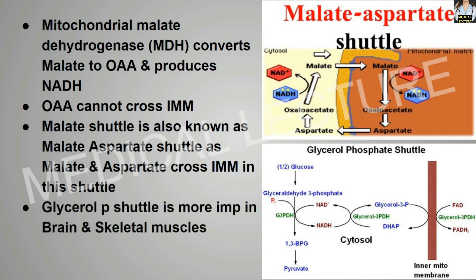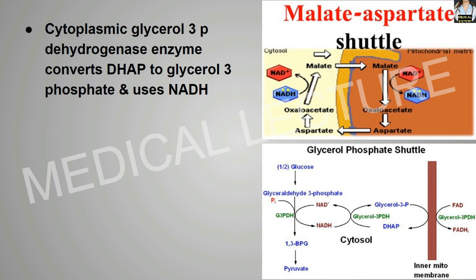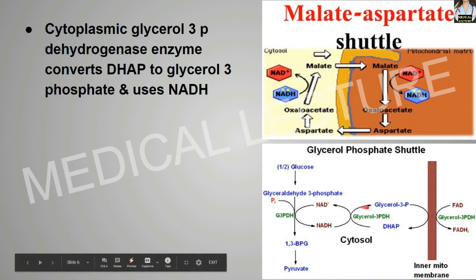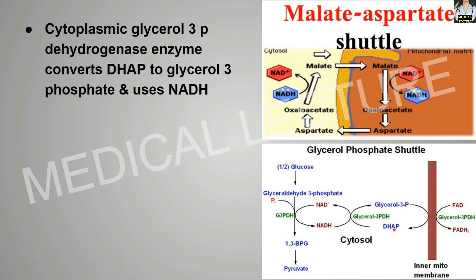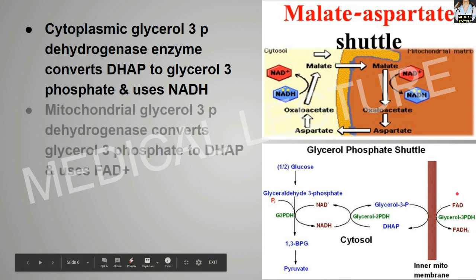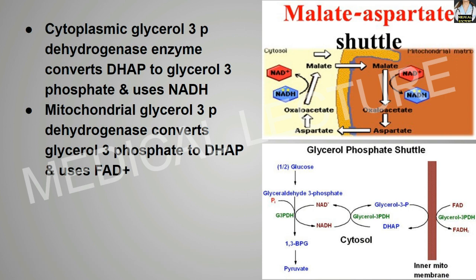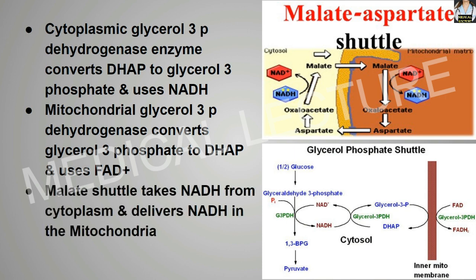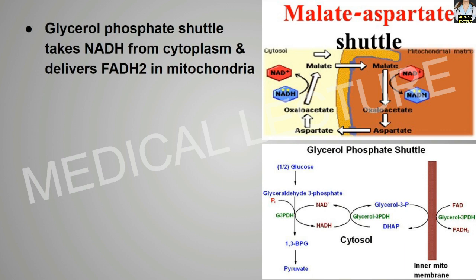The glycerol 3-phosphate shuttle is more important in the brain and skeletal muscles. Cytoplasmic glycerol 3-phosphate dehydrogenase converts DHAP to glycerol 3-phosphate and uses the NADH. This glycerol 3-phosphate then converts back into DHAP after giving the hydrogen to the mitochondria. Mitochondrial glycerol 3-phosphate dehydrogenase converts glycerol 3-phosphate to DHAP and uses FAD+. The malate shuttle takes NADH from the cytoplasm and delivers NADH in the mitochondria. The glycerol phosphate shuttle takes NADH from the cytoplasm and delivers FADH2 in the mitochondria.